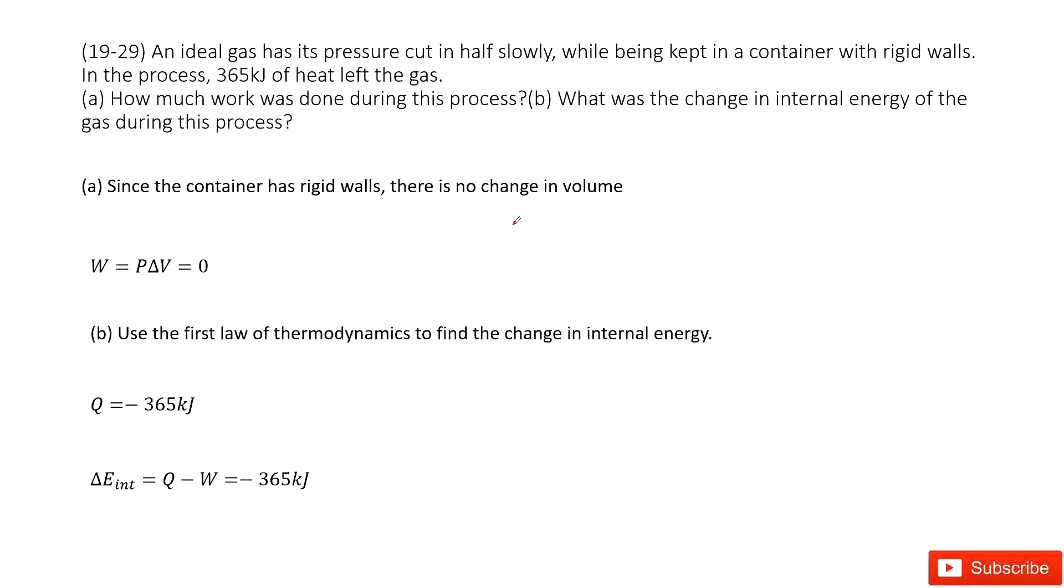We have an ideal gas in a box. The pressure is decreased slowly, but the volume is not changed because it's kept in a container with rigid walls. This tells us delta V equals zero.